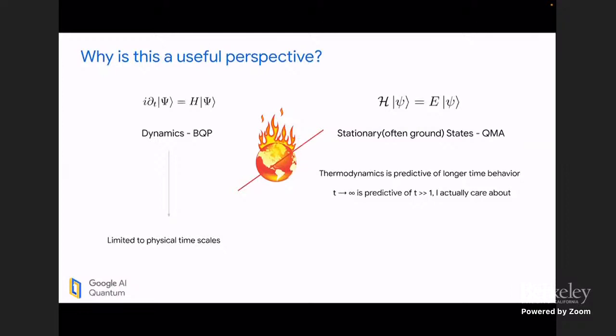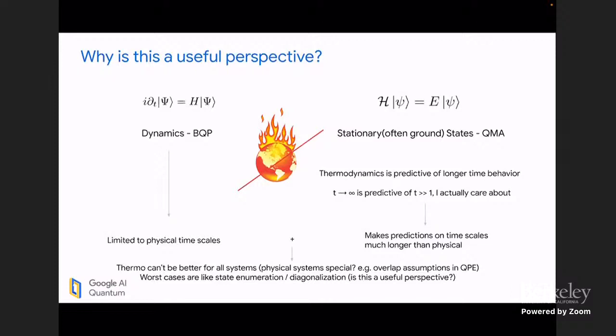And so thermodynamics is often predictive of long-time behavior, because things tend to have enough time to settle into states where T going to infinity, so this thermodynamic limit, is predictive of a long time scale that I actually care about. So, of course, there are limits to this, for example, no living things are at thermodynamic equilibrium, the Boltzmann's dog is a great example of this, but often these stationary states also have the additional structure that they're well approximated more so than the dynamics. And so by making an approximate answer to the infinite time limit, I seem to be able to jump the line on these physical time scale constraints. And so I make predictions on time scales that are much beyond this fast-forwarding limit.